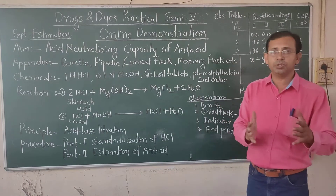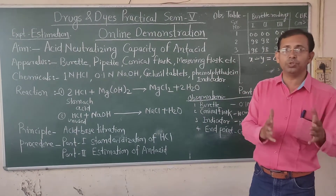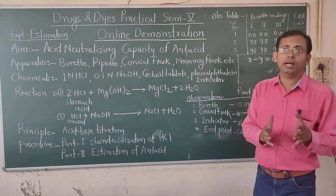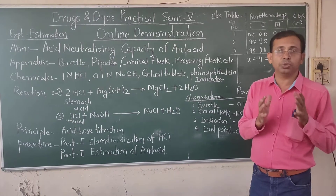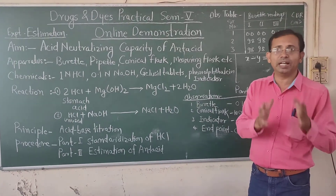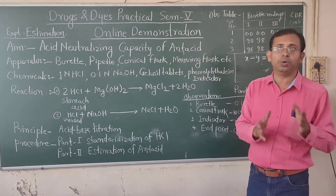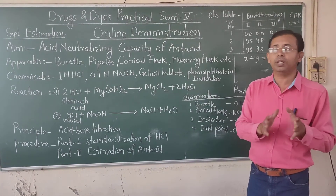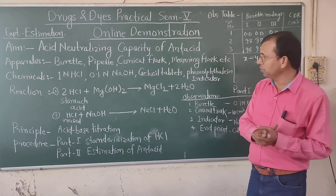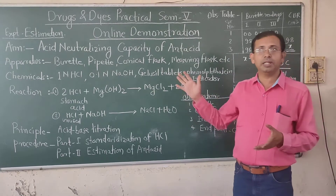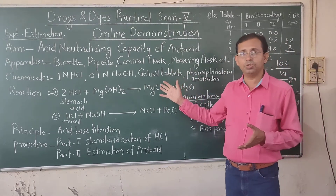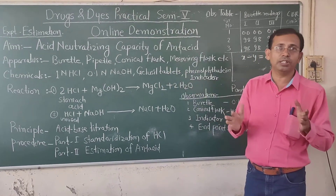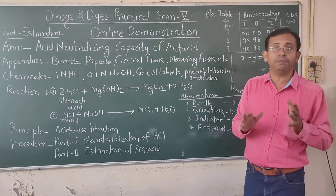Primary standard solution means the solution which is 100% pure and the solution having exact normality, and whose concentration is known to us — it is called a primary standard solution. Similarly, secondary standard solution is the solution whose concentration is not known to us and we have to find it out.